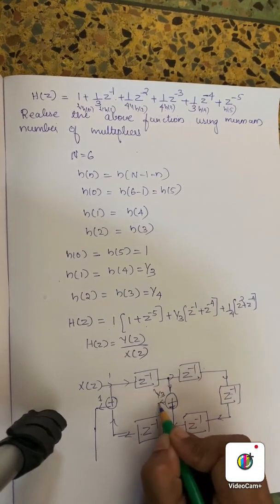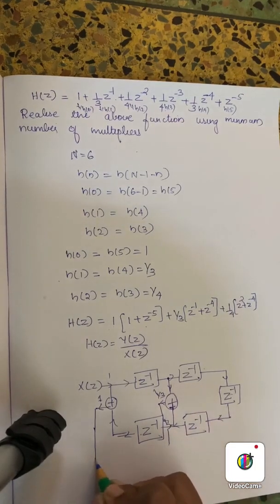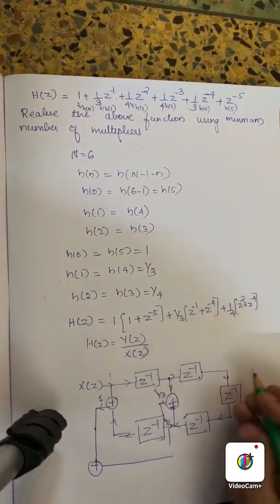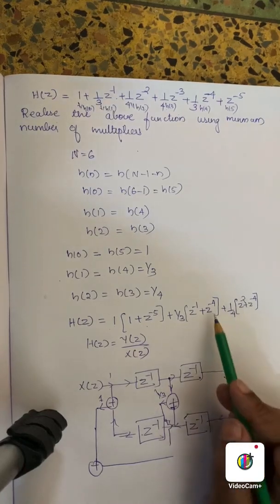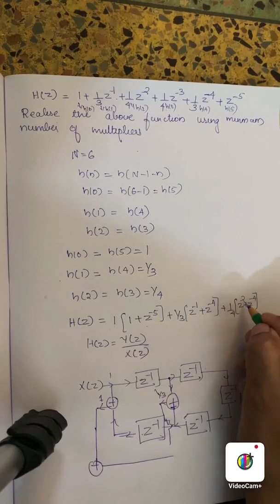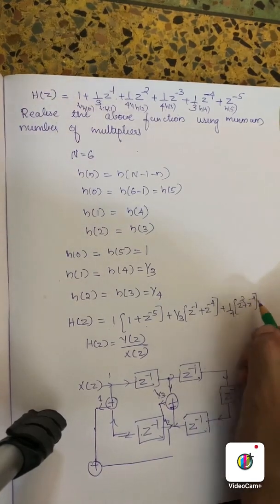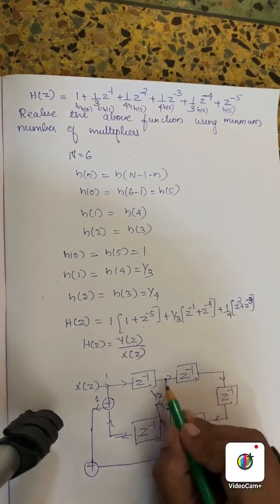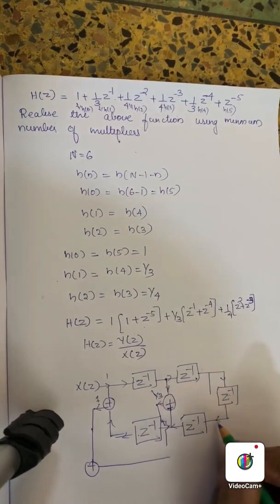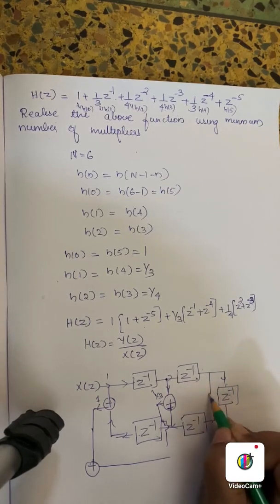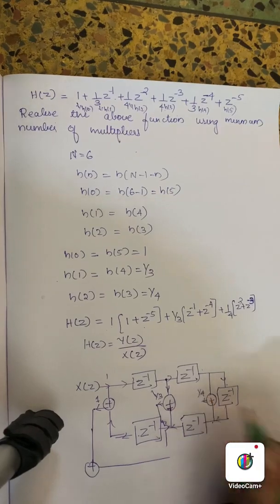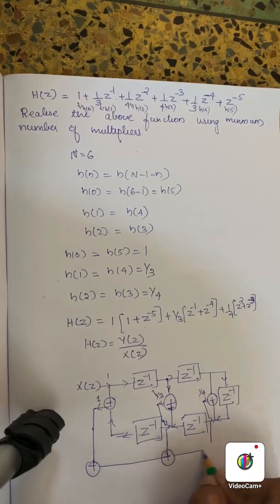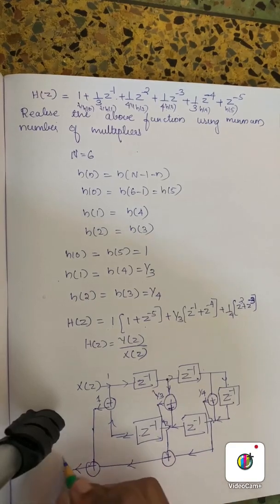The multiplier 1/3 is applied and combined. Then 1/4 is applied: 1/4 into z raised to minus 2, plus z raised to minus 3 at positions minus 2 and minus 4. We then add these summed outputs: 1 by 4. We add all the branches together to get the final output Y(z).